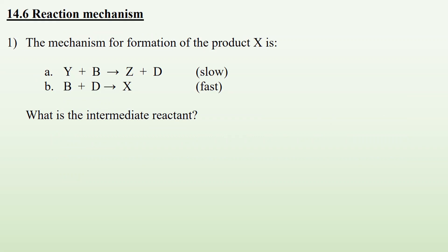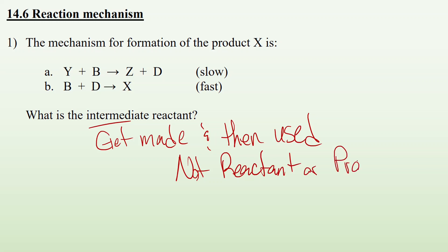Number one, we got a mechanism for making the product X below. What is the intermediate? Intermediates get made and then used. So we're looking for something that's not in the reactants or products. If you take a look, what's being made in the first step? We're making Z and D, and then in our second step, D is getting used up. So this is going to cancel out. Our overall reaction is going to be Y plus B makes Z plus X. Where is the D in those equations? It's nowhere because it is an intermediate.